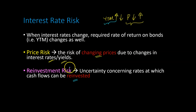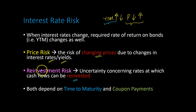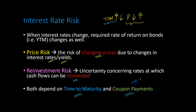So let me try and explain how this works. As we will discover, the price risk of a bond and the reinvestment risk of a bond depends on two main things: one, its time to maturity, and secondly, the magnitude of its coupon payments, which depends on the coupon rate.